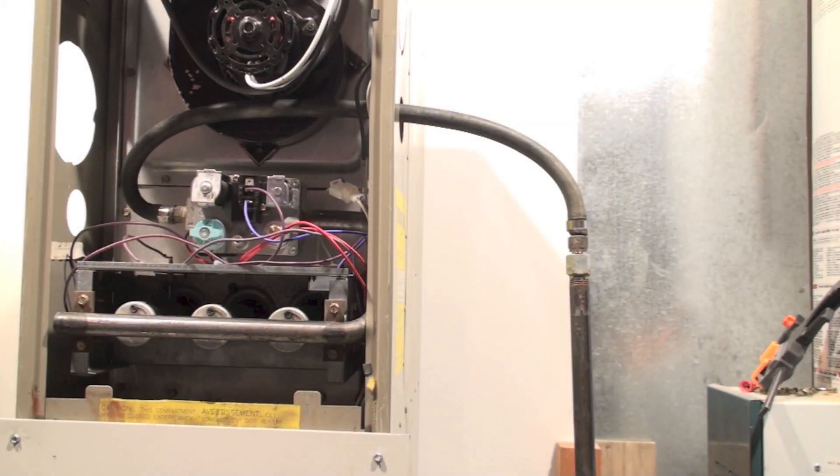Okay, in this one we're going to check the flame rod to see if it's working properly, and we're going to check the integrated furnace control to be sure that it shuts the unit off when there is a lack of flame sensing.